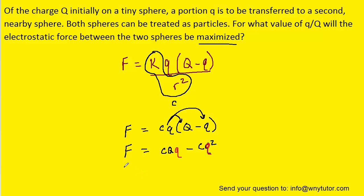So now we're ready to take the derivative. We can call the left side F prime. Now recall that a constant in front of a variable has a derivative of just that constant, so CQ. And then the next term we have to use a power rule. So we pull the power down and then subtract one from the exponent. So this becomes Q to the first.